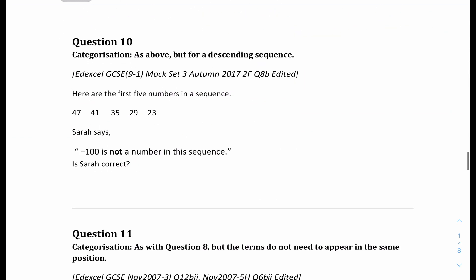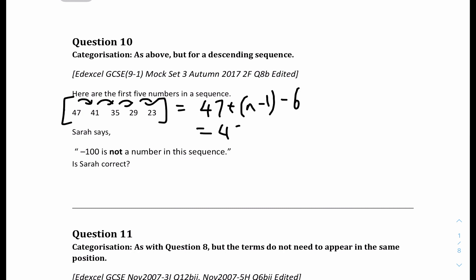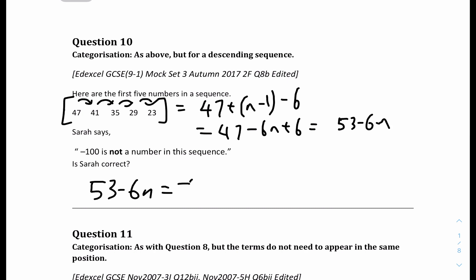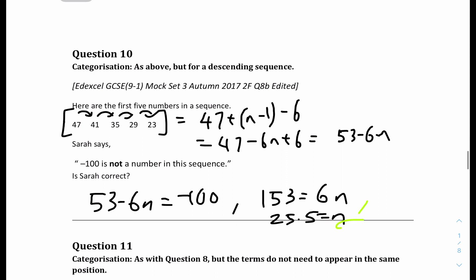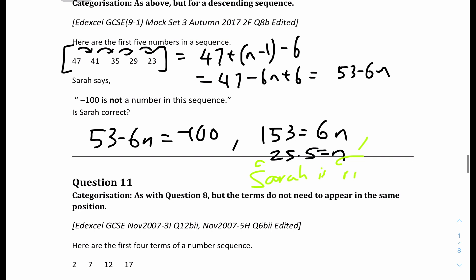Question 10: here are the first 5 numbers in the sequence. Sarah says that −100 is not a number in the sequence — is she correct? The common difference is −6, so using u(n) = 47 + (n−1)(−6), we get 47 − 6n + 6 = 53 − 6n. Setting 53 − 6n = −100 gives 153 = 6n, so n = 25.5. Since n is not a whole number, −100 is not in the sequence. Sarah is correct.